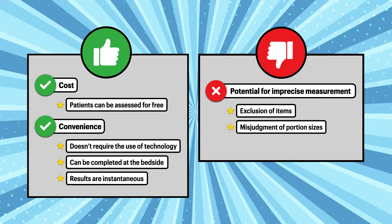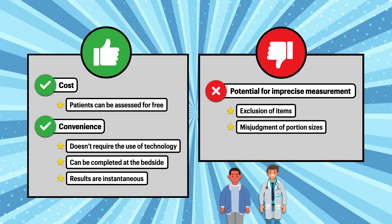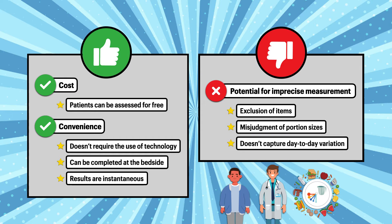A major disadvantage of the 24-hour diet recall is the potential for imprecise measurement through the exclusion of items and the misjudgment of portion sizes. This can be attributed to the patient being unable to accurately describe their usual intake, the dietician failing to ask the appropriate probing questions, or a lack of access to tools that improve the accuracy of measurements like food models and measuring cups and spoons. The recall also only asks for 24 hours, so it doesn't have the ability to capture day-to-day variation in intake.